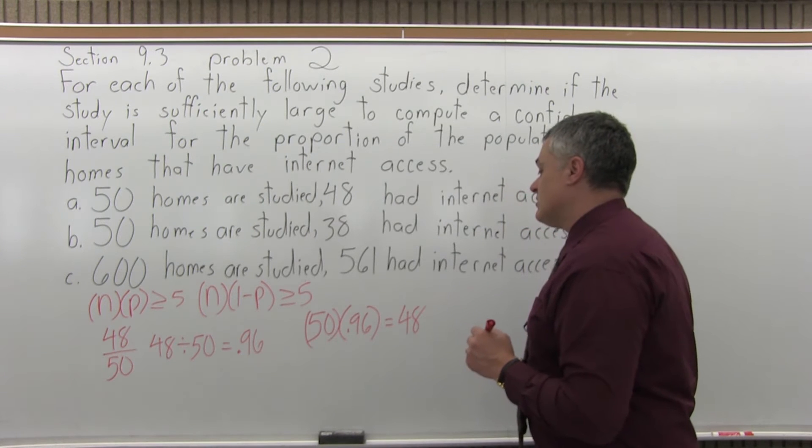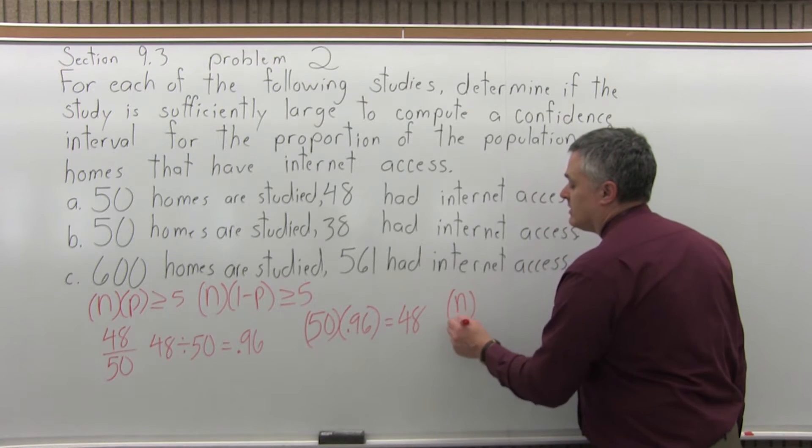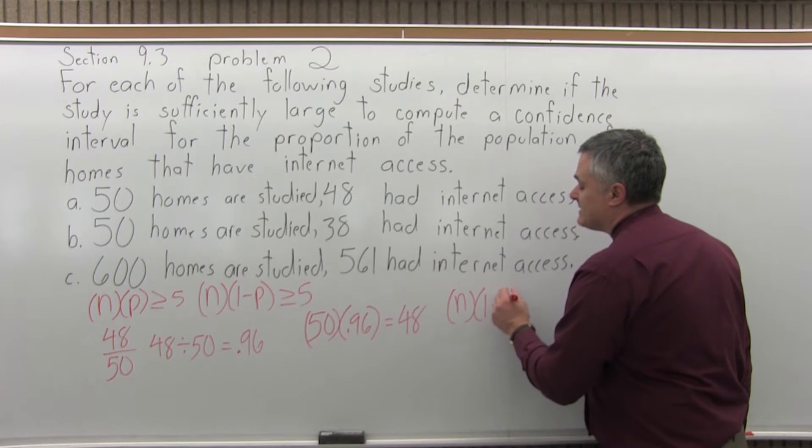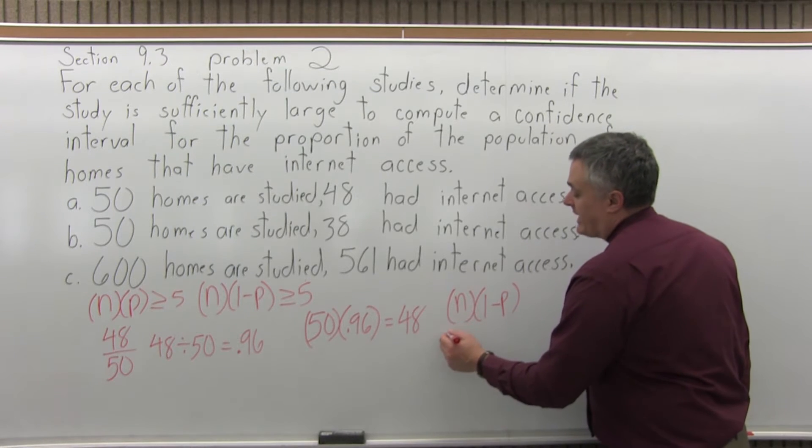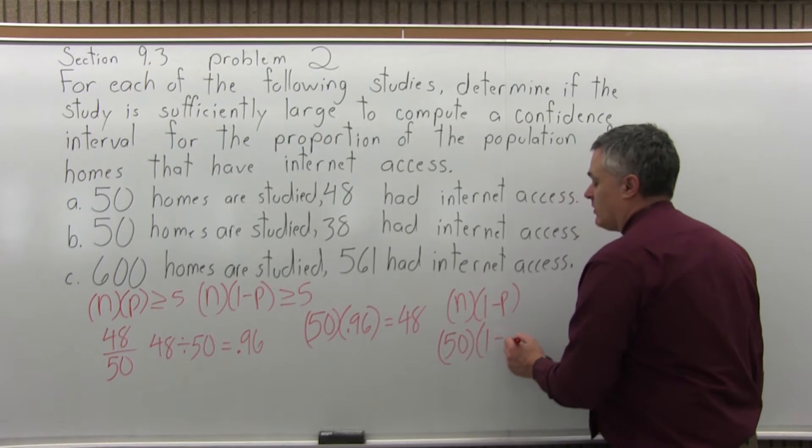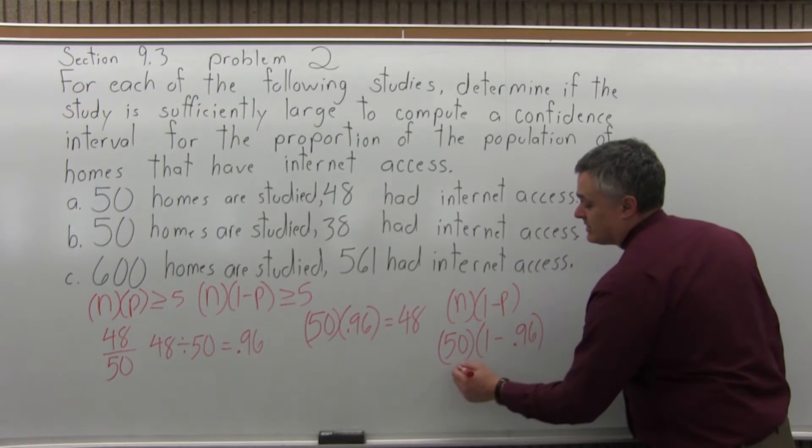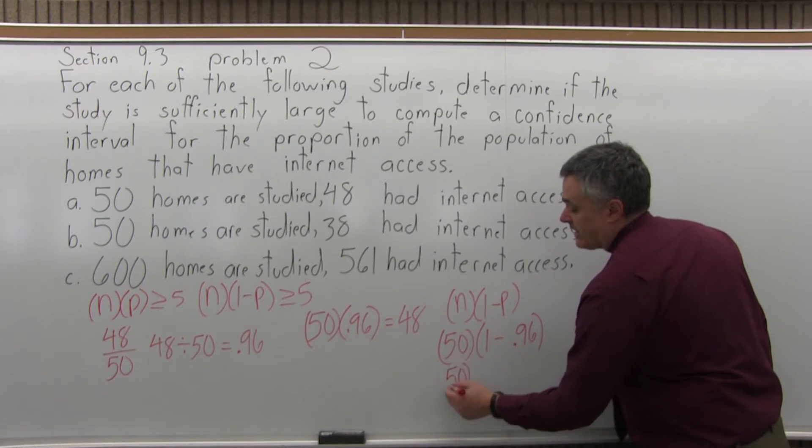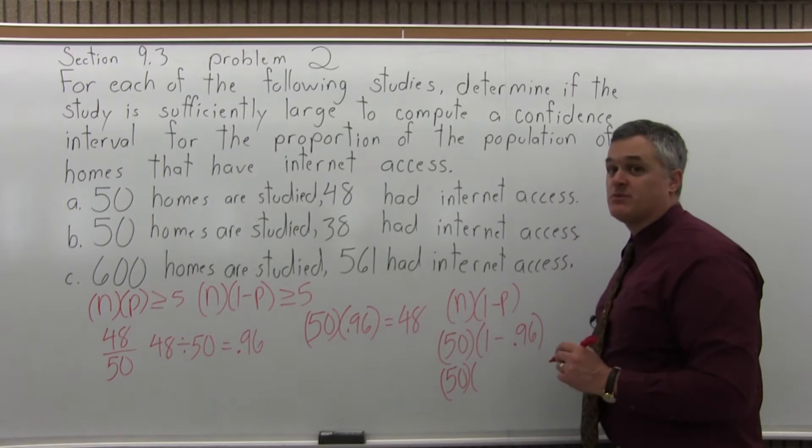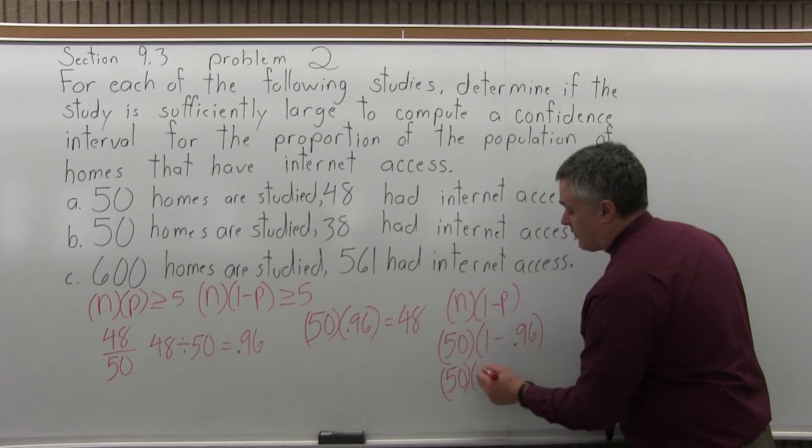But, let's also do n times 1 minus p. So, n is still 50. 1 minus p will be 1 minus .96. So, let's simplify that. I still have 50. 1 minus .96 would be .04.